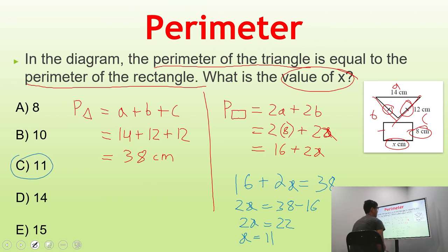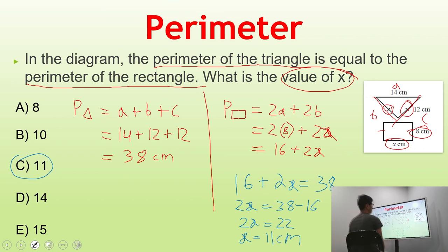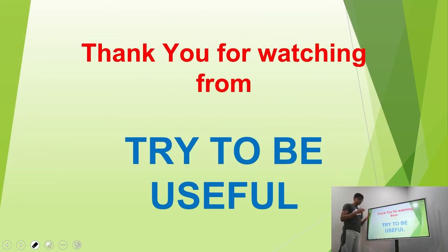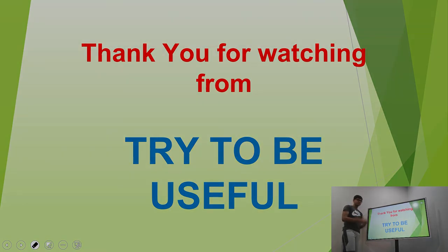So we found that X equals 11, meaning the X centimeters side is actually 11 centimeters. That's how you solve this problem, and that's how you approach this type of perimeter problem. Thank you so much for watching, and we'll see you in our next math contest series video.